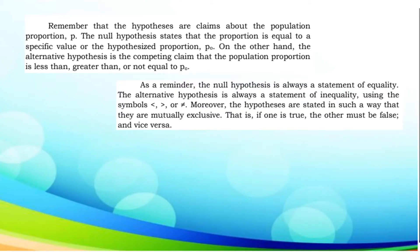Additionally, the null hypothesis is always a statement of equality. The alternative hypothesis is always a statement of inequality using the symbols less than, greater than, or not equal to. Moreover, the hypotheses are stated in such a way that they are mutually exclusive — that is, if one is true, the other must be false, and vice versa.